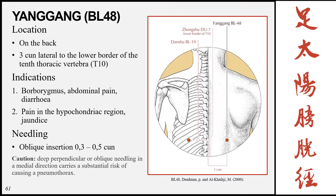The next point is Yanggang, Bladder 48, located on the middle back three cun lateral to the tenth thoracic vertebra. Indications again relate to its location: pain of the hypochondriac region and stomach-related conditions such as borborygmus, abdominal pain, and diarrhea. Insertion is oblique 0.3 to 0.5 cun with caution against deep perpendicular or oblique needling in a medial direction.